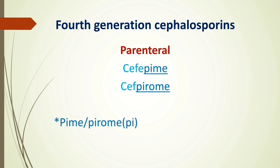Both fourth generation drug names contain '-pime' or '-pirome', and both share the common term 'pi' — P-I. So the mnemonic to memorize fourth generation cephalosporins is that both contain 'pi': cefepime and cefpirome. That is all about fourth generation cephalosporins.